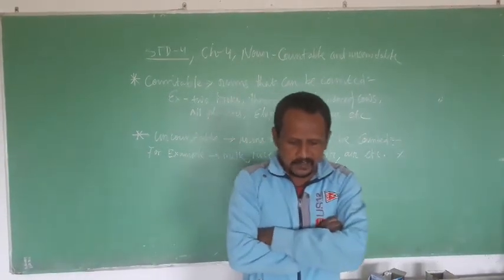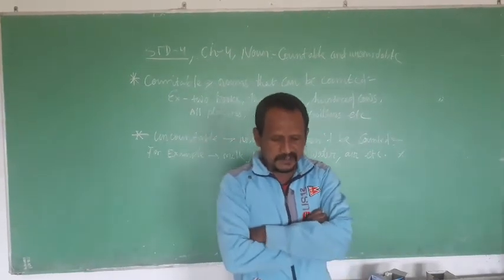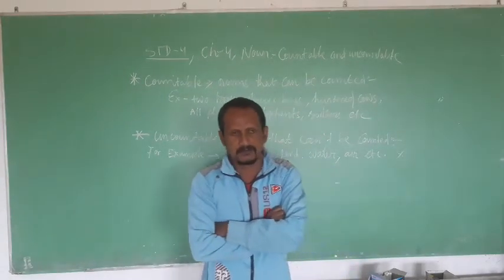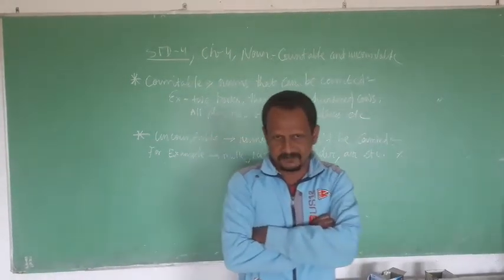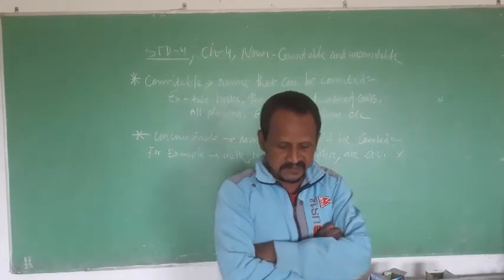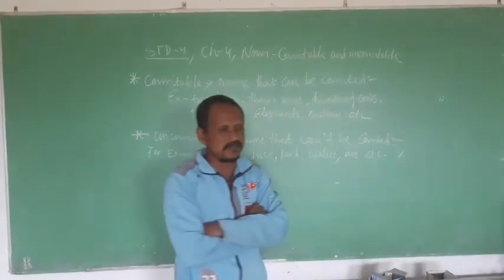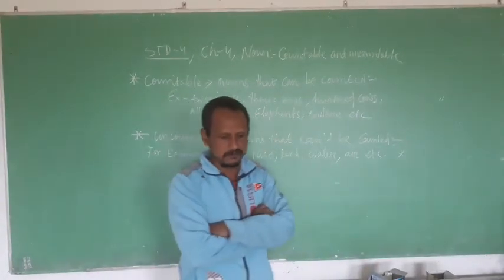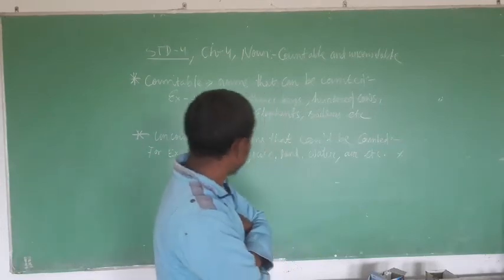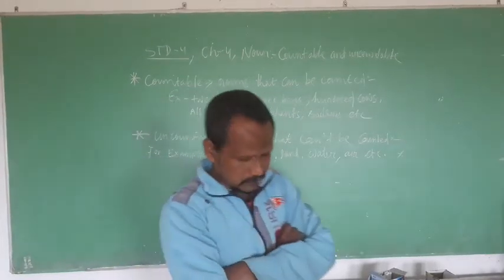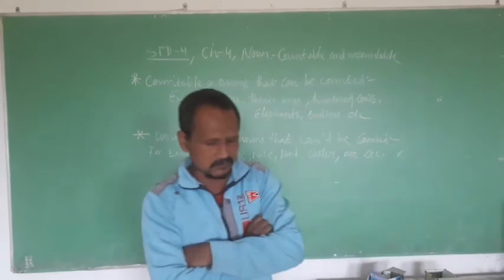The cost of oil and gas is increased day by day. Here cost, oil, and gas — in this sentence cost, oil, gas are things which we cannot count. So these are called Uncountable Noun.